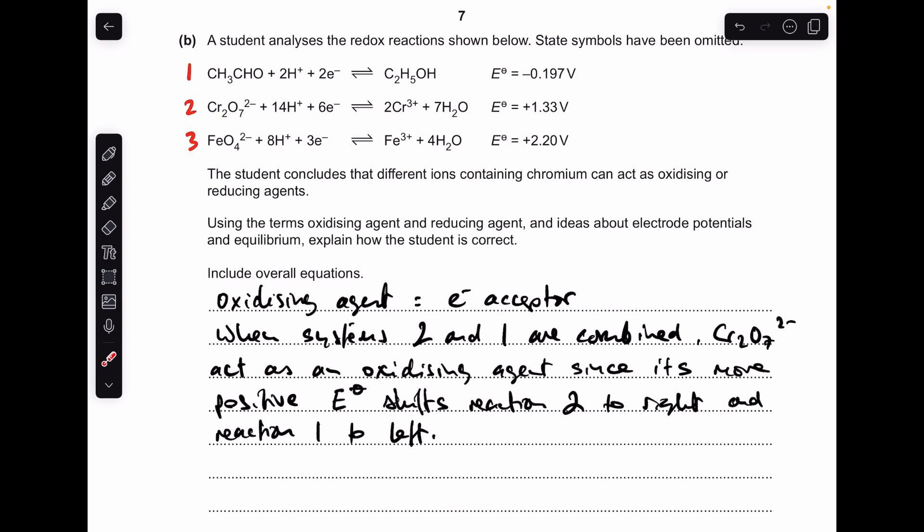When systems 2 and 1 are combined, the Cr2O7^2- ions act as an oxidizing agent because it's more positive electrical potential shifts reaction 2 to the right and reaction 1 therefore to the left. We'll just need to combine these two equations to generate the overall reaction. I've got 6 electrons in system 2 and we've got 2 in system 1, so we'll need to treble system 1 and add it to system 2.